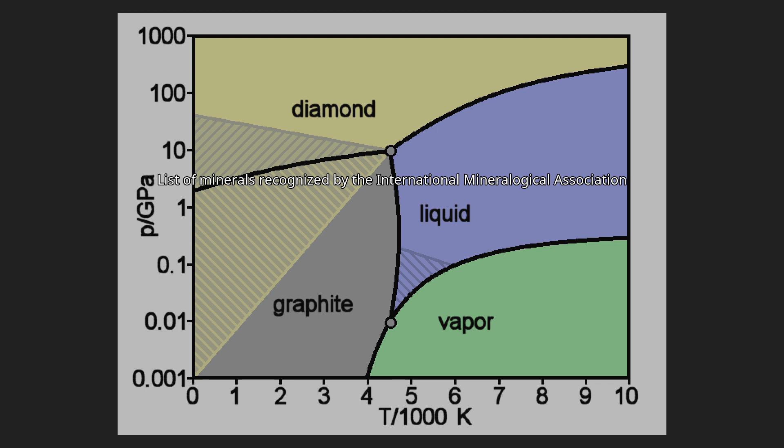Abbreviations: asterisk (*) discredited IMA/CNMNC status. SP special procedure. Q or questionable/doubtful IMA/CNMNC, Mindat.org or Mineralienatlas. And published without approval of the IMA/CNMNC, or just not an IMA approved mineral, but with some acceptance in the scientific community nowadays.